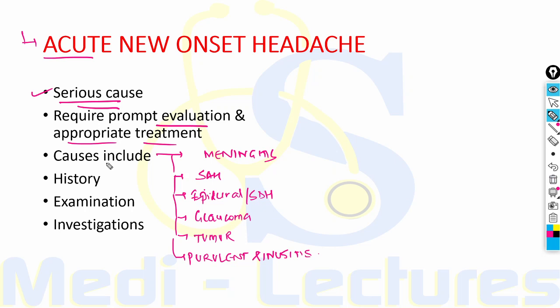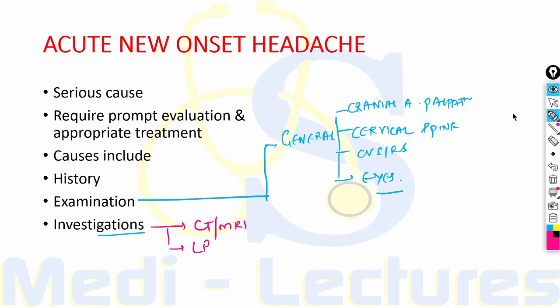The causes are usually secondary headache and include meningitis, subarachnoid hemorrhage, epidural or subdural hematoma, glaucoma, tumor and purulent sinusitis. In the evaluation of the patient, history, examination and investigations play a very important role. History including the psychological state of the patient is very important because there is a relation between headache, depression and anxiety.